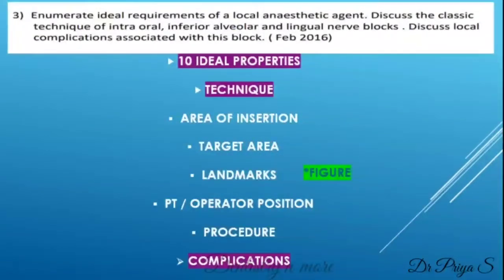Enumerate the ideal requirements of a local anesthetic agent. Discuss the classic technique of IANB nerve block. Discuss the local complications associated with this particular nerve block. The ideal properties of local anesthetic agent can be referred from Malamed — it is given in the first chapter on the first page. So list out all 10 ideal properties.